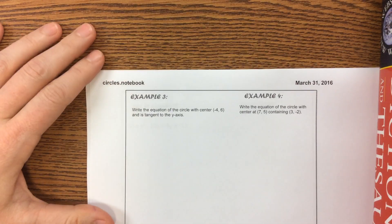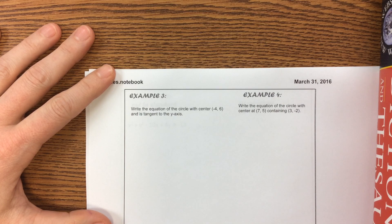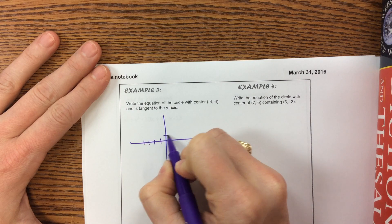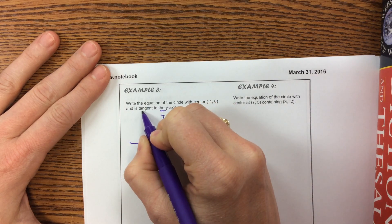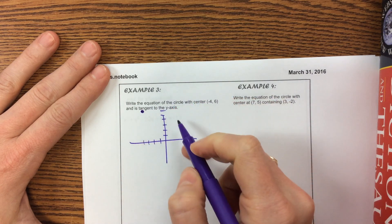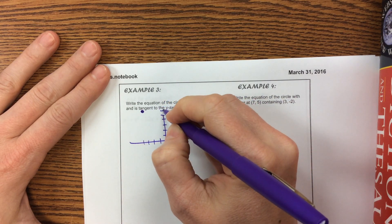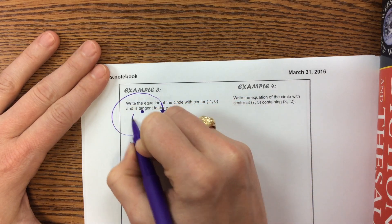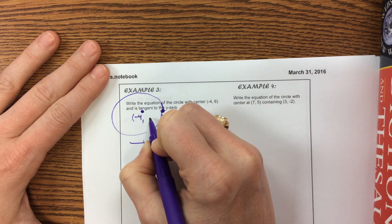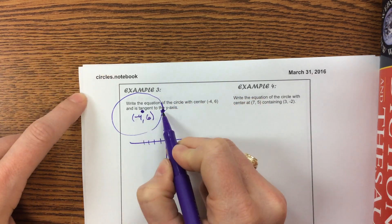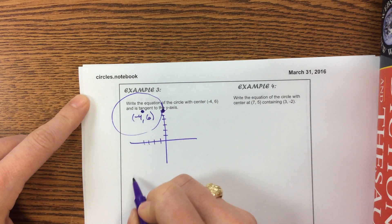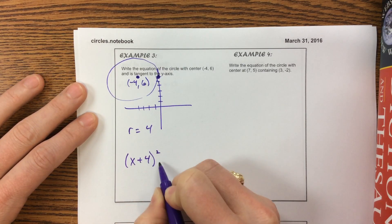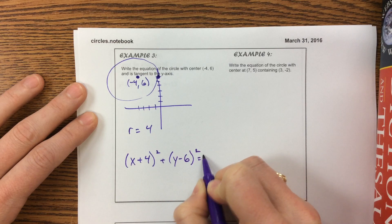The next one: write the equation of a circle with center negative 4, 6, and it is tangent to the y-axis. It might be helpful to look at what we're talking about. Here's the center at negative 4, 6, and it's tangent to the y-axis, meaning it touches this point on the y-axis. We are 4 units away from the y-axis, so we have a radius of 4. This becomes x plus 4 squared plus y minus 6 squared equals 16.